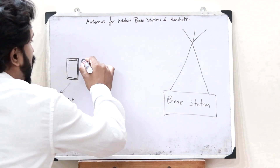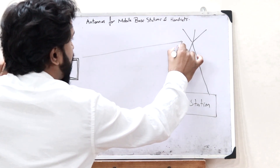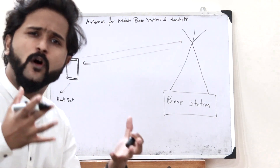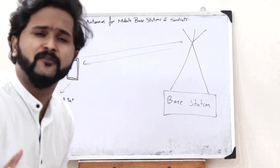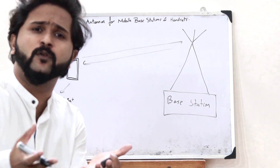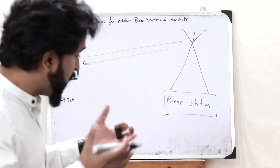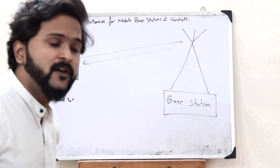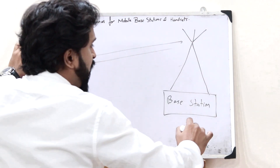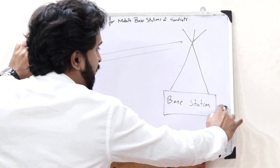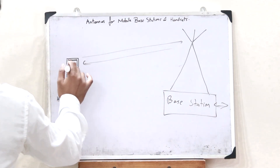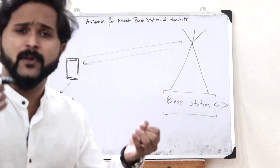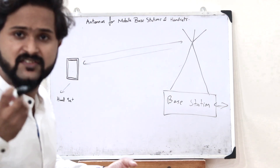Once this particular smartphone establishes a connection, then we can do whatever we want with our smartphone. If you want to make a phone call, you can simply make one. Or if you want to access the internet, you can do it because now the smartphone is connected to this particular base station, which helps in accessing whatever we want to do. As simple as that.